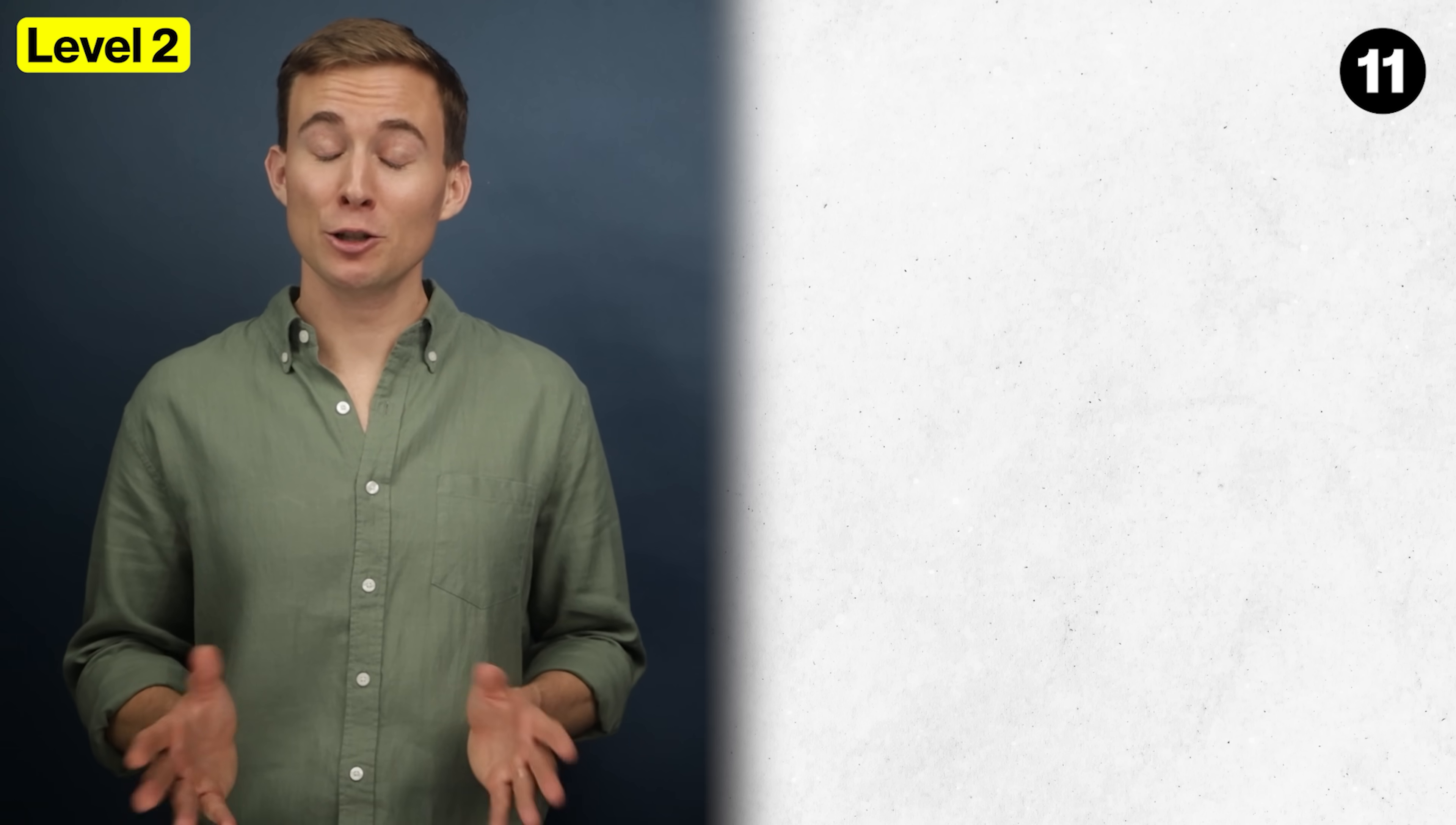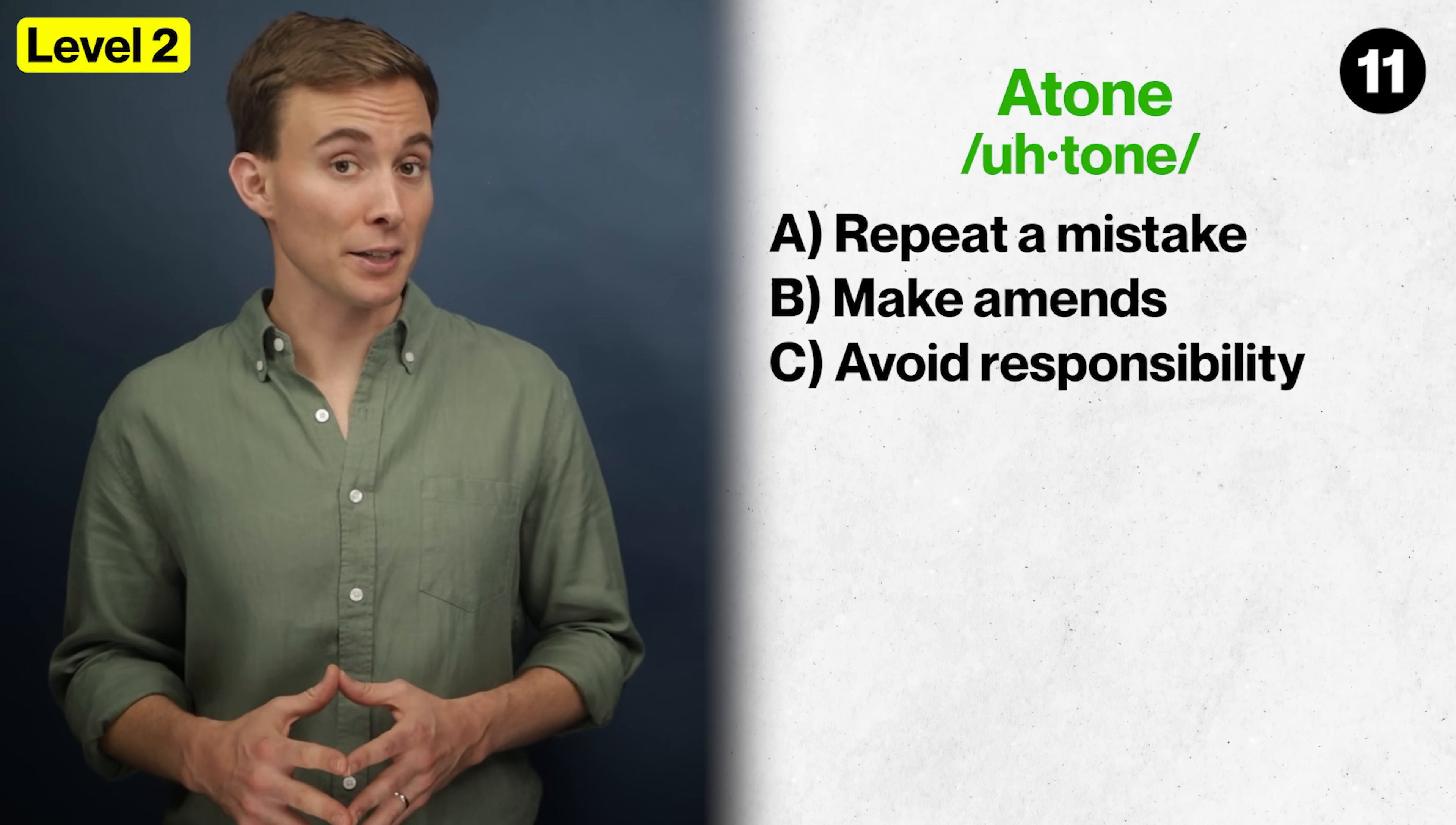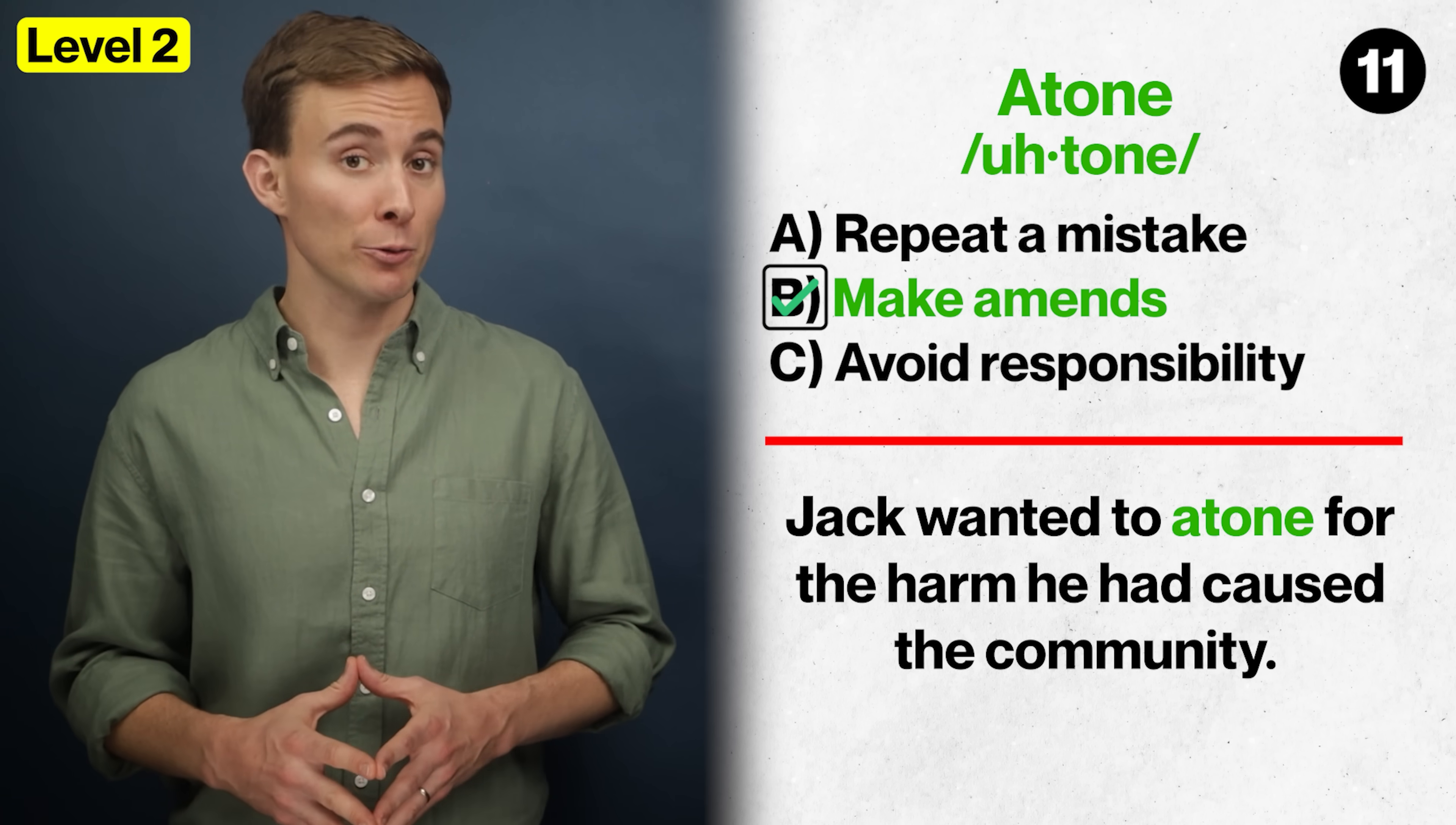Verb number eleven, to atone. And does this mean to repeat a mistake, to make amends, or to avoid responsibility? To atone is to make amends for a mistake or wrongdoing. Jack wanted to atone for the harm he had caused the community.